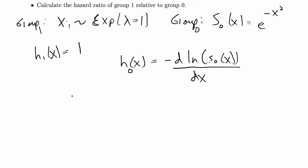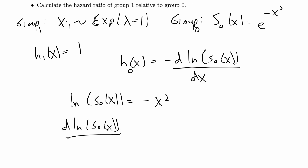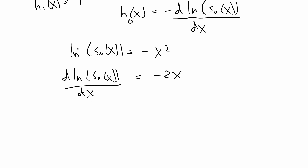I'll do this step by step. First, I take the natural log of the survival function, which gives me negative x squared. Then I take the derivative of that, which gives me negative 2x. Finally, I take the negative of that derivative, which gives me 2x. So the hazard function for group 0 is 2x.